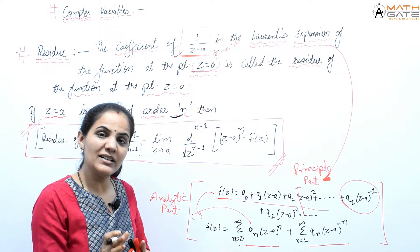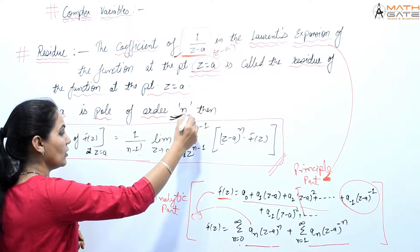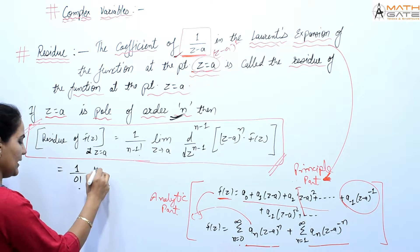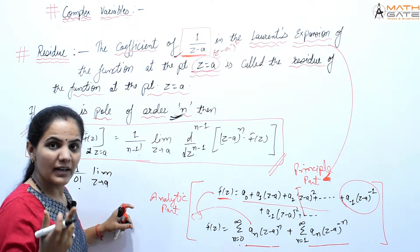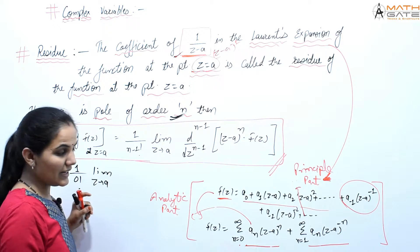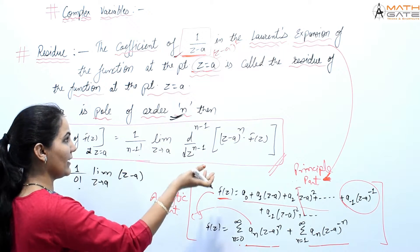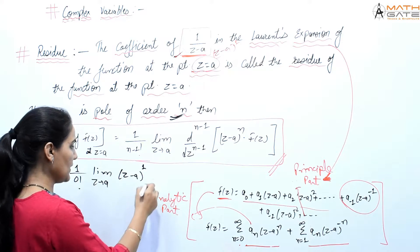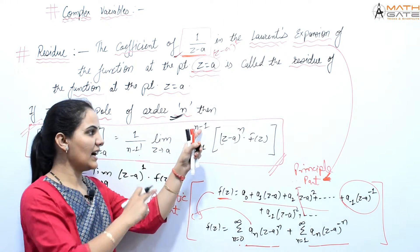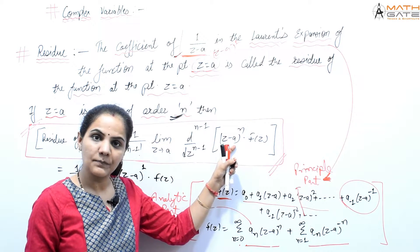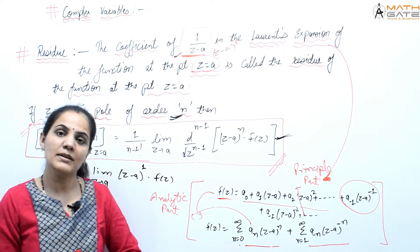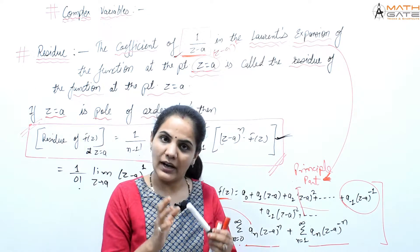As we understand: if the pole is of order n, this formula applies. For a simple pole (first order), it becomes (1/0!) × lim[z→a] of (z−a)·f(z), since the n−1 derivative is zero-order. For a second-order pole, n=2, one derivative is taken. For nth order, n is substituted. Using this formula, residue of any complex function can be found.